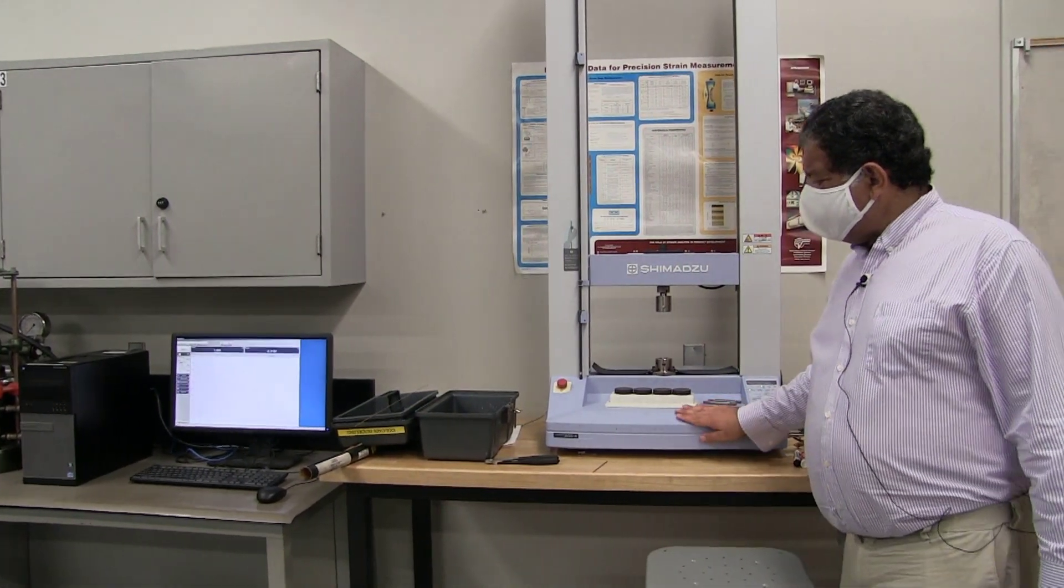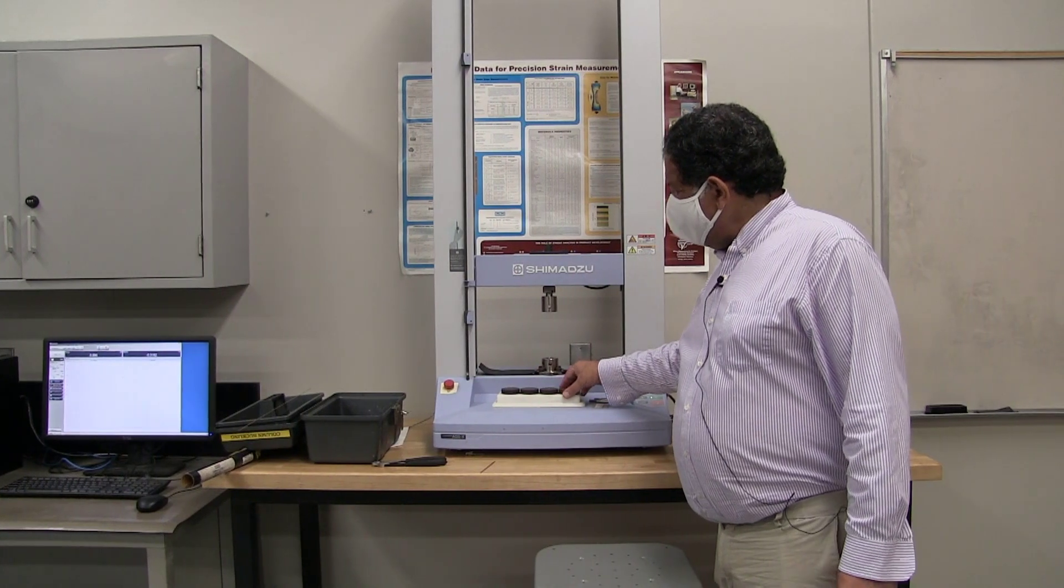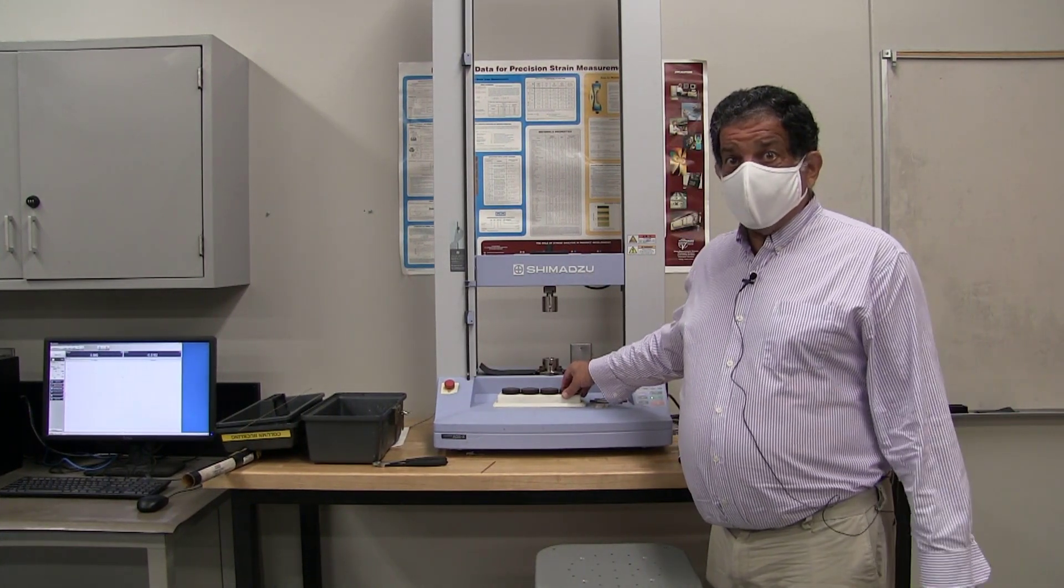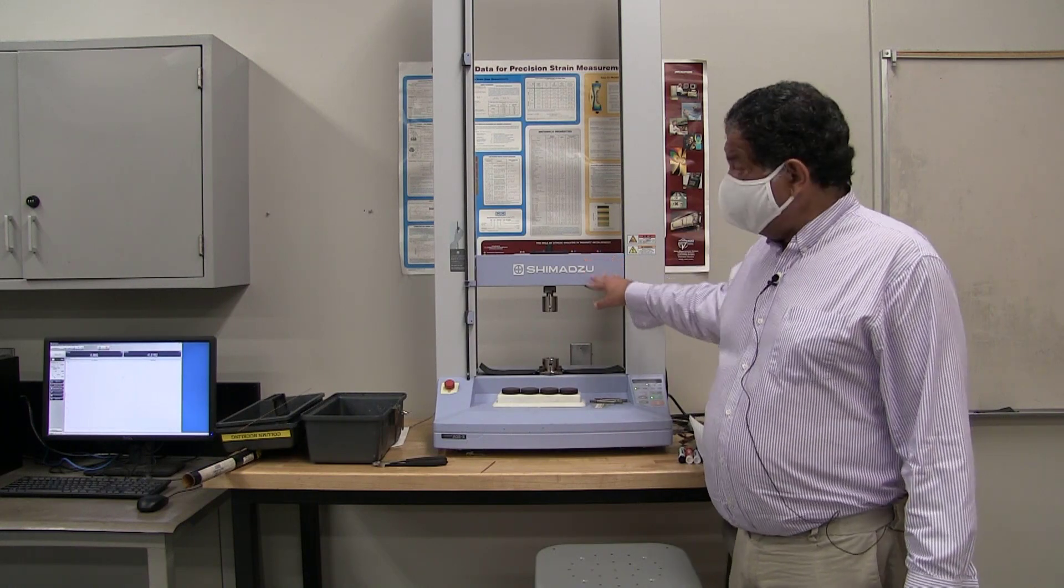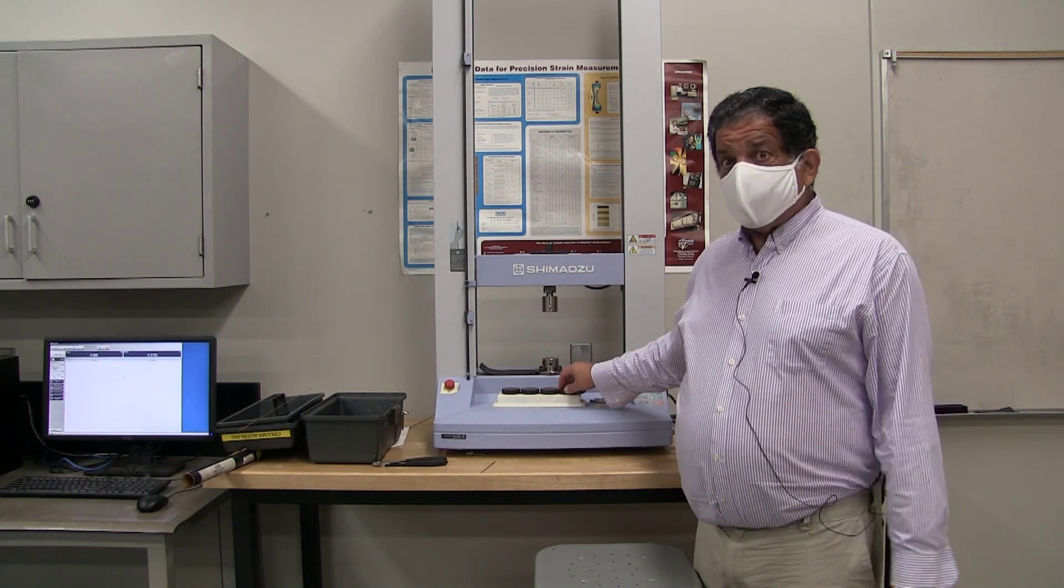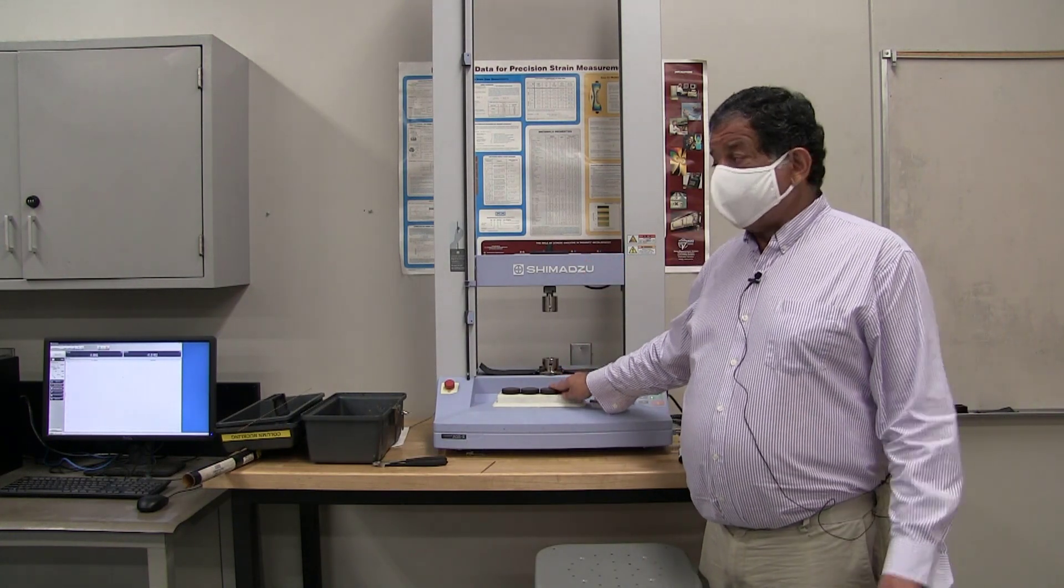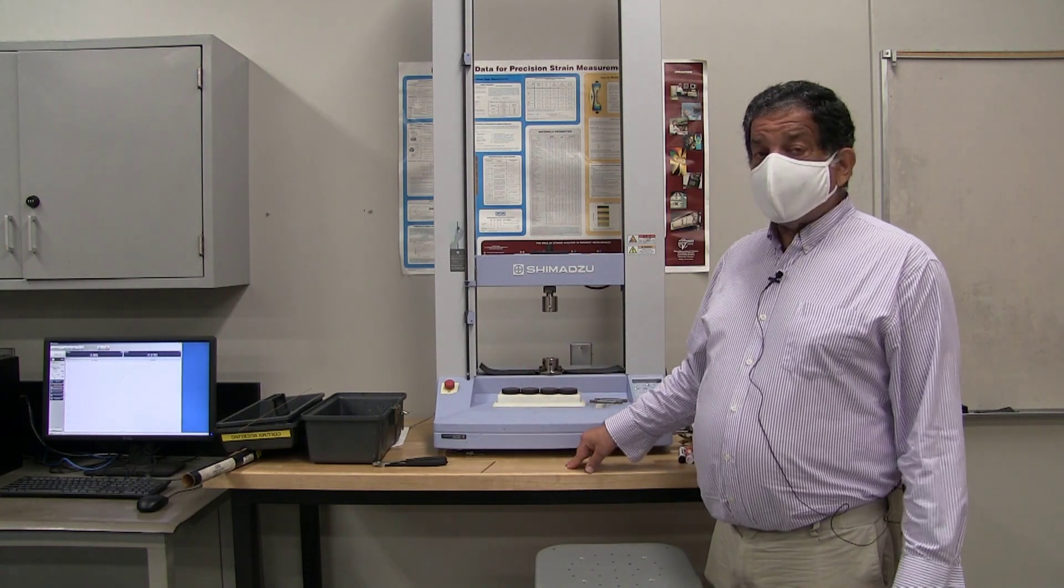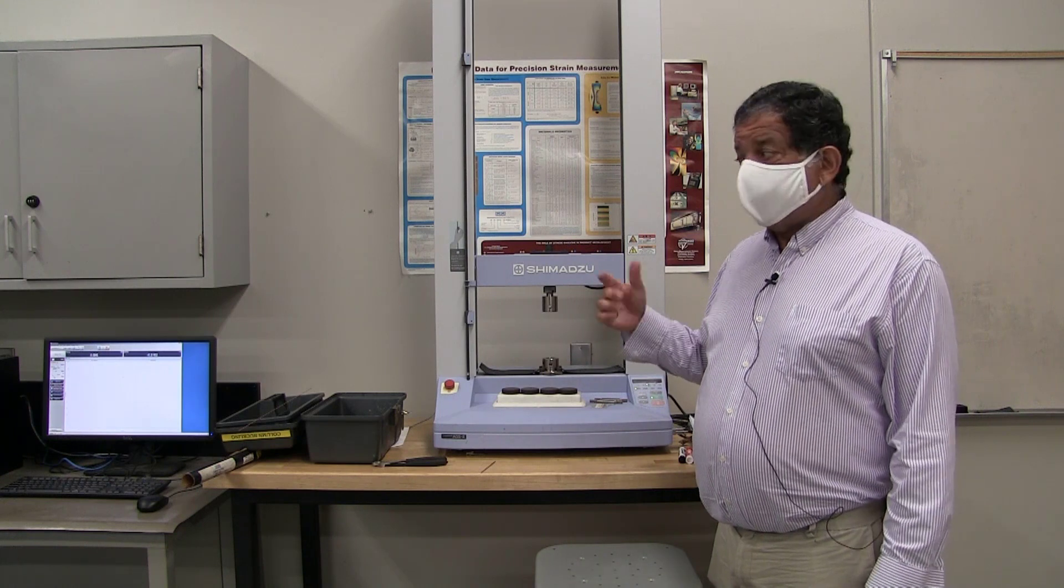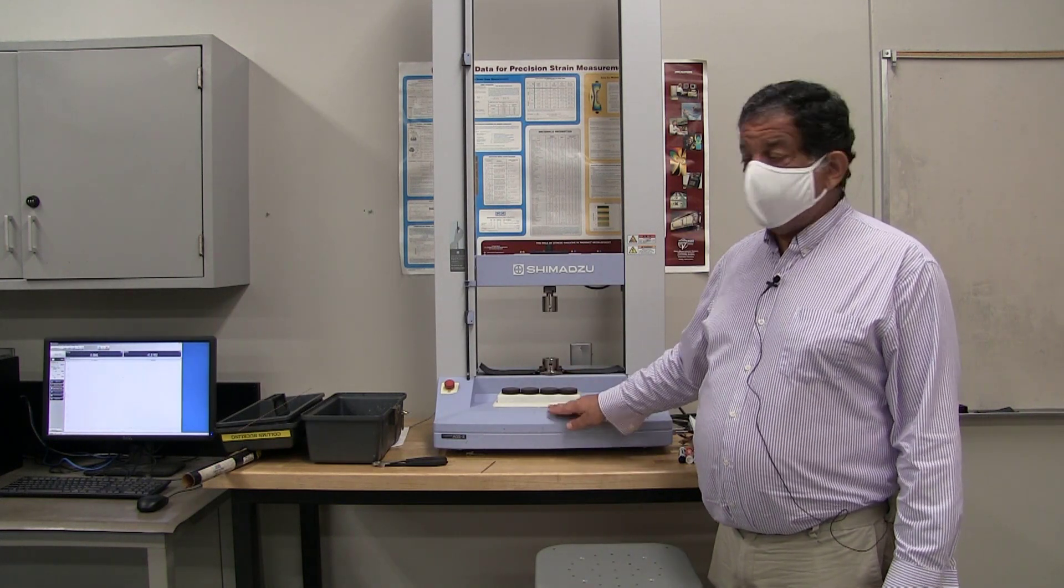This is our testing machine for this experiment. It's just like the test machine we used for the tension test, except it's a much smaller capacity machine. The tension test machine could go up to 10,000 pounds. This one can only go up to 2,000 pounds, but that means it's more sensitive to small loads, which is the kind of loads we're going to have in the buckling experiment.